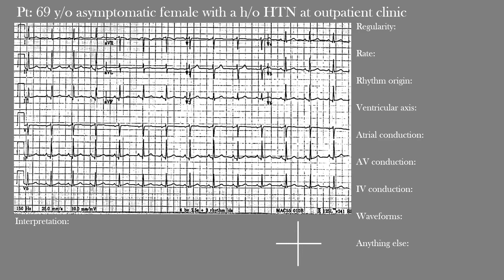Let's review the approach we've been using to interpret EKGs. We have the patient's clinical presentation and the EKG below it. On the right side of the screen we have a list we'll go through before making our final interpretation. First, there's the regularity of the rhythm — are we dealing with a regular or irregular rhythm, and if irregular, is it regularly or irregularly irregular? Next, we have the heart rate.